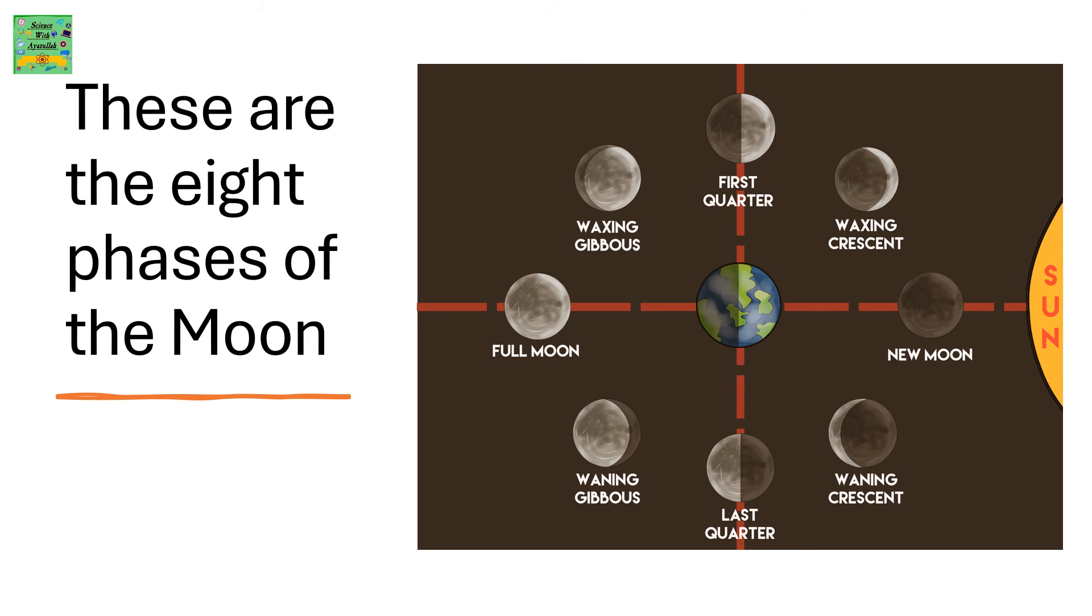These are the 8 phases of the moon: First Quarter, Waxing Crescent, New Moon, Waning Crescent, Last Quarter, Waning Gibbous, Full Moon, Waxing Gibbous.